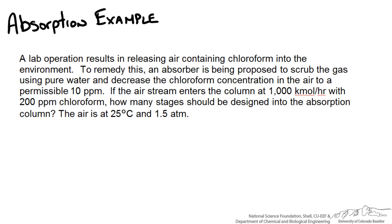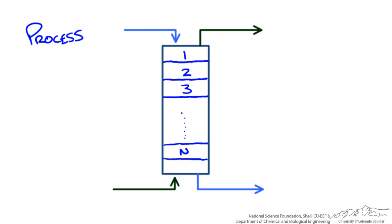First place to start is with a diagram or a picture of our process. Here I have drawn an absorption column. We have an entering stream here of gas, or in this case our air stream containing chloroform. We have gas leaving our column. We are pumping liquid, in this case water, to the top of our column so that it flows downwards and we get our liquid leaving the column.